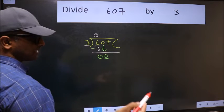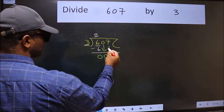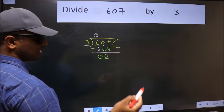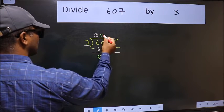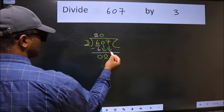So we should bring down the second number. And the rule to bring down the second number is we should put 0 here. Then only we can bring down this number.